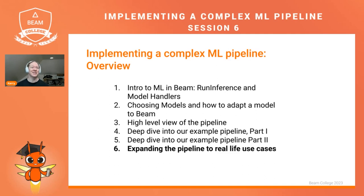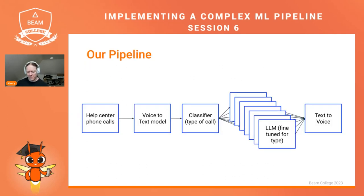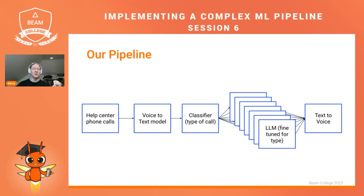We got to see it running live successfully end-to-end. Now we're going to zoom out a little bit and talk about how we can go from this basic example pipeline to solving real-world problems. Our pipeline follows a fairly simple pattern of doing some inference using a classifier to then send data to different models, collecting the output of those models, and then doing another transformation or inference on the output, assuming that all those models are essentially fine-tuned.